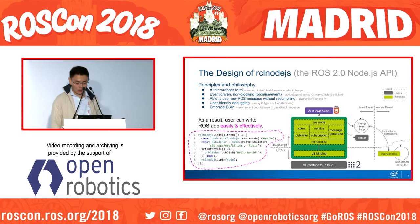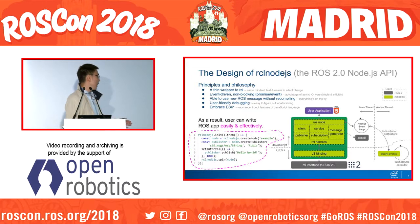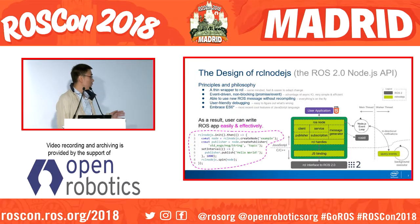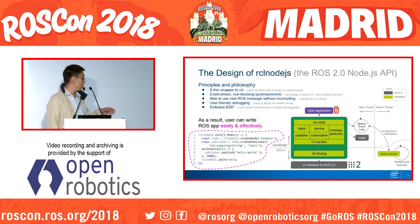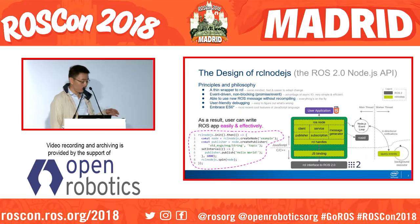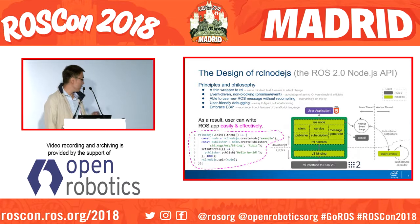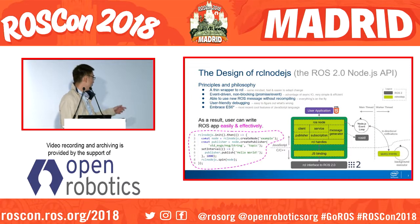We decided to integrate the IDL generator into our project, so you don't have to run the generator to generate source code for messages — which is more convenient for debugging. User-friendly debugging can dramatically shorten the development cycle. Node.js is famously known as easy to debug, and we added extra facilities to help developers debug in rclnodejs. The diagram on the right shows the framework of rclnodejs. The red part is the Node.js main thread and the worker thread, which polls events from the rcl library in the background. The horizontal line separates JavaScript from C++, and we bind the C interfaces to the JavaScript side. As a result, you can write a ROS app in a very easy and effective way — only nine lines of code to create a node, construct a publisher, and send a topic of string type.